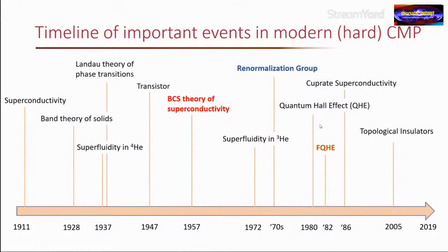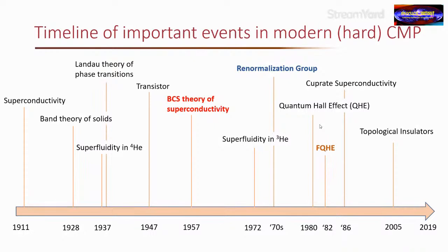If we look at the timeline of important events in condensed matter physics — which refers to the study of liquids and solids — this chart gives highlights of what's happened over the past 100 years. One of the most important discoveries in this history was that of superconductivity.